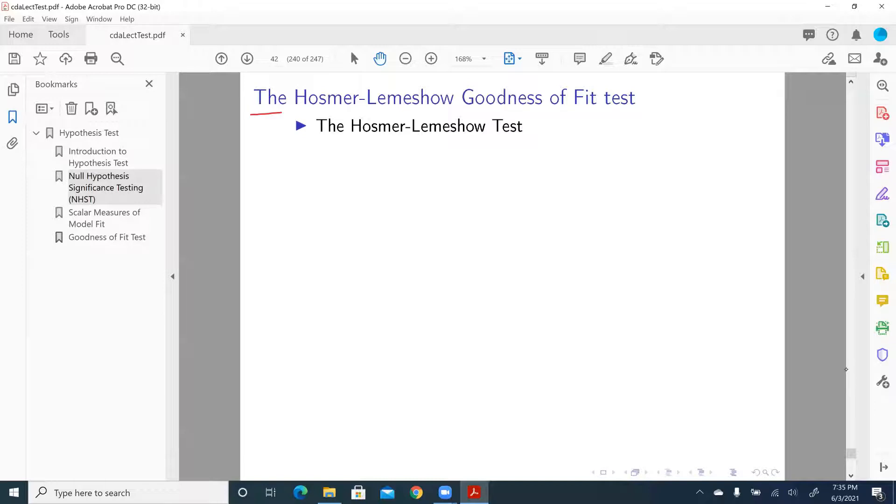And here, let me get into the last category, that is goodness of fit test. So we have a test called Hosmer-Lemeshow goodness of fit test. These two authors co-authored a book called Applied Logistic Regression. They proposed this test in a paper in 1980, then included the discussion of this test in their book. So it's called Hosmer-Lemeshow, or sometimes called HL test.